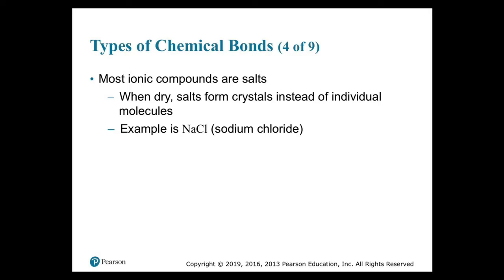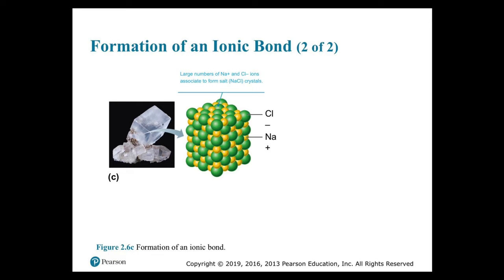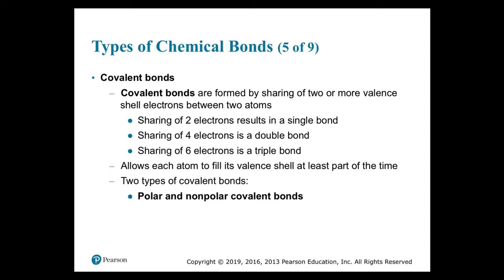Although sodium chloride and other ionic compounds are common in body fluids, they are not present as intact crystals. When placed in water, ionic compounds dissolve and the component anions and cations separate. Some atoms complete their outer electron shells not by gaining or losing electrons but by sharing electrons — this creates covalent bonds. Sharing two electrons results in a single bond, sharing four electrons is a double bond, and sharing six electrons is a triple bond.